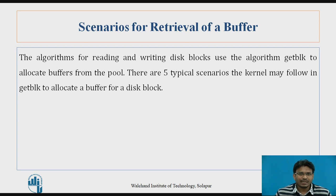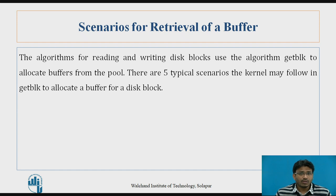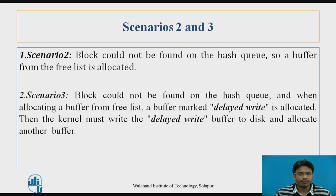I will give you a review of what we are going to learn in this session. The algorithms for reading and writing disk blocks use the algorithm get block to allocate the buffer from the pool. There are typically 5 scenarios the kernel may follow in get block to allocate a buffer for a disk block. We have already covered scenario 1 in our previous video, so now today we will see scenarios 2nd and 3rd.